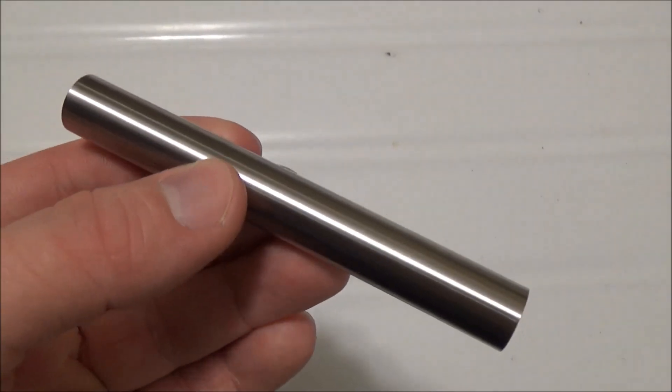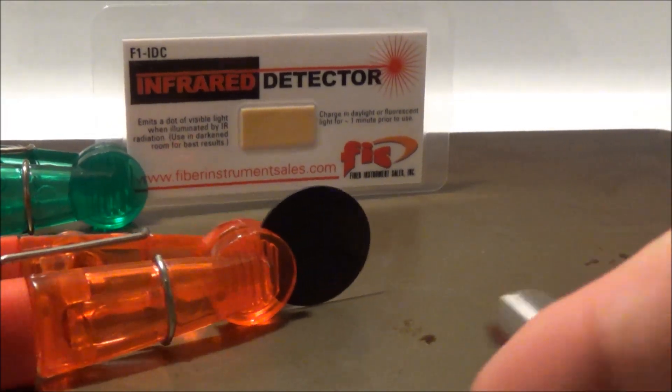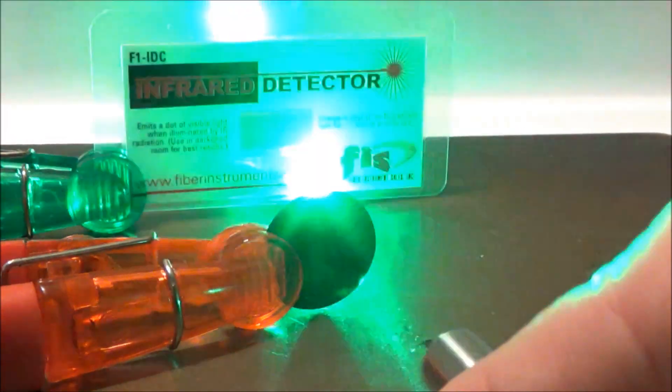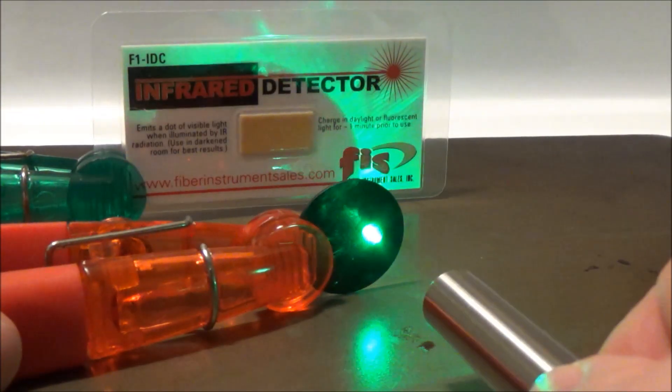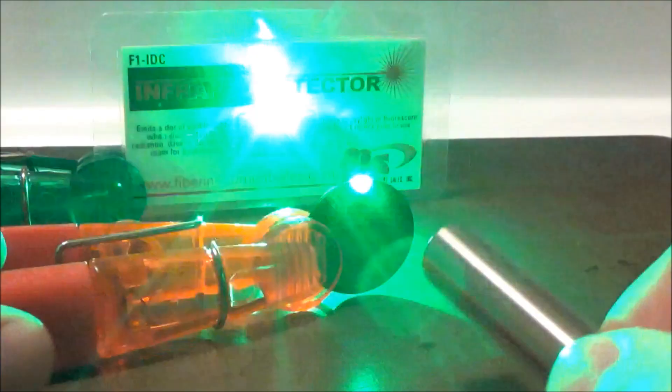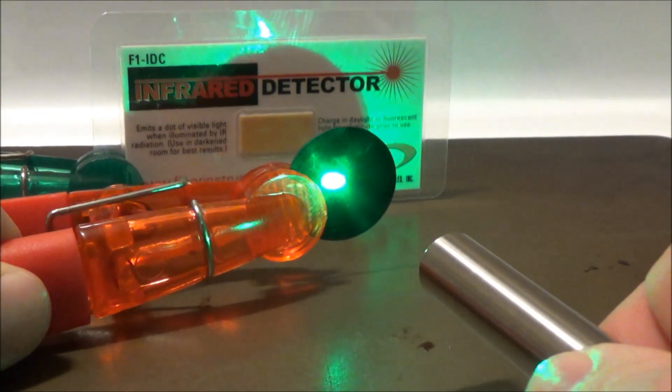And the last thing I wanted to show you guys here is a direct diode laser, just to demonstrate to you that there is also no IR. This is a 520 nanometer, 150 milliwatt direct diode laser. And you're going to see here there is no infrared light detected at all. And that's because the direct diode process doesn't use the infrared pump diode.